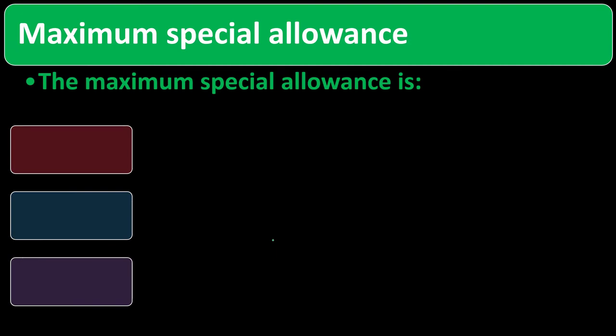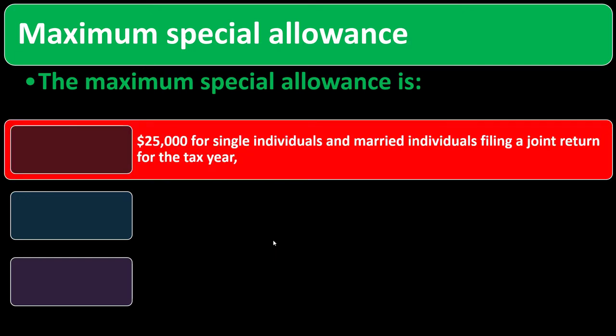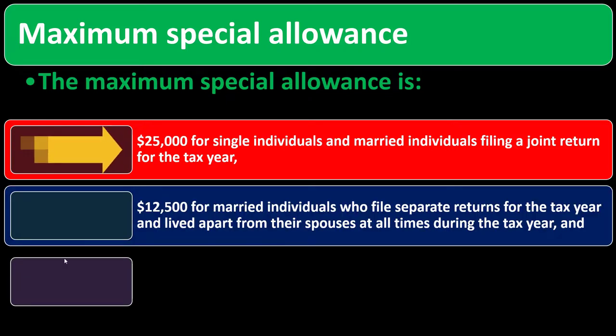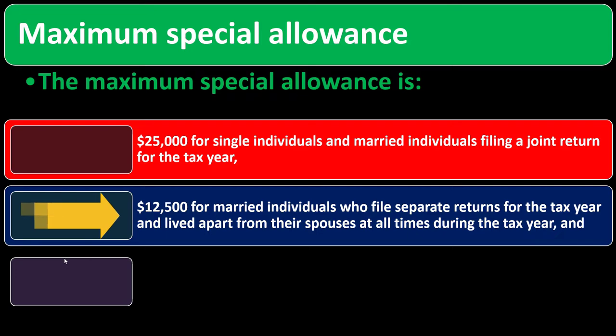So we're now on the maximum special allowance. The maximum special allowance is $25,000 for single individuals and married individuals filing a joint return for the tax year. That $25,000 is the special component you might have. It's $12,500 for married individuals who file separate returns for the tax year and lived apart from their spouses at all times during the tax year.